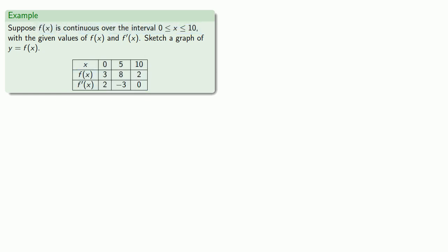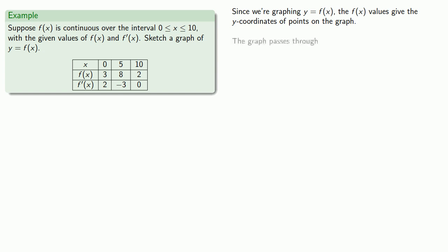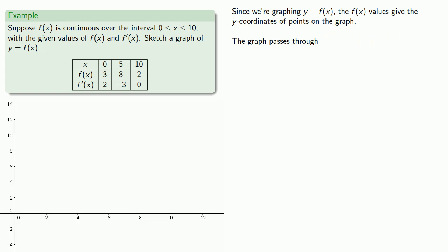So where can we start? Since we're graphing y equals f of x, the f of x values give the y coordinates of points on the graph. And so we know that the graph passes through the points (0, 3), (5, 8), and (10, 2). So let's start by plotting these points.